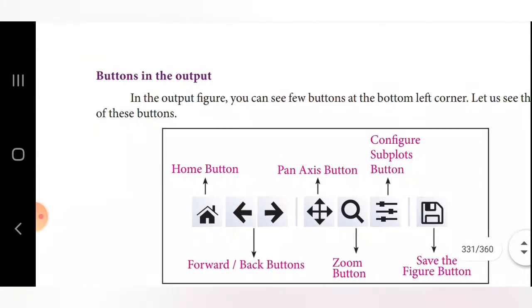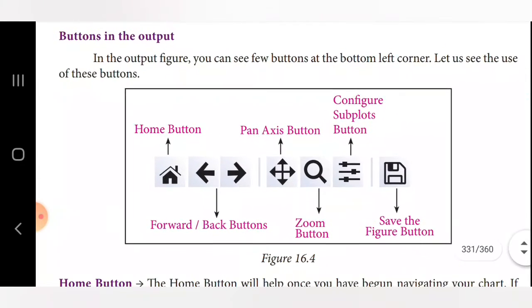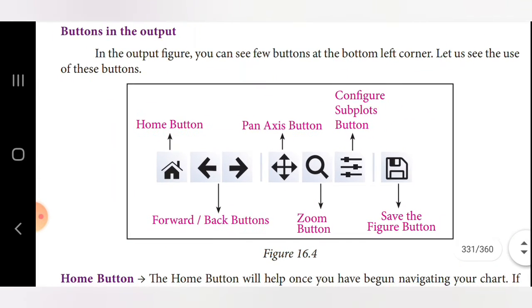Next, let's look at the buttons available in the output screen and their purposes. In the output figure you can see a few buttons at the bottom left corner. These include: Home button, Forward/Backward buttons, Pan Axis button, Zoom button, Configure Subplots button, and Save Figure button.